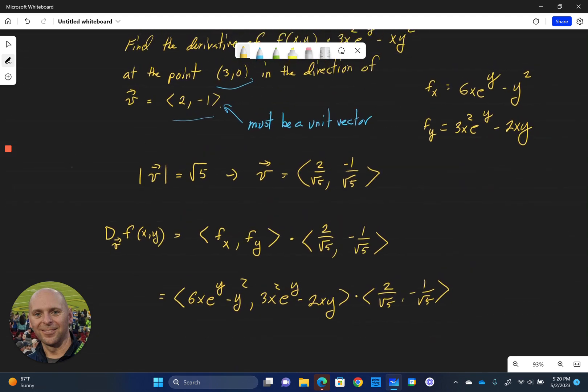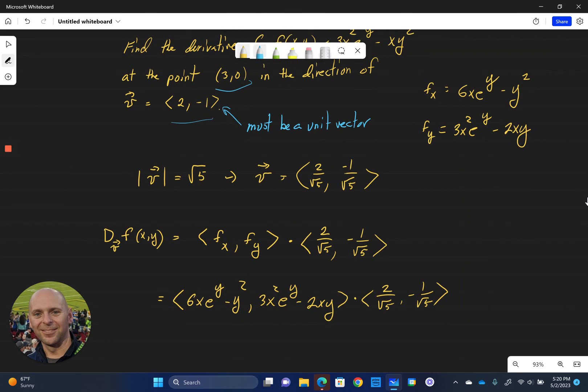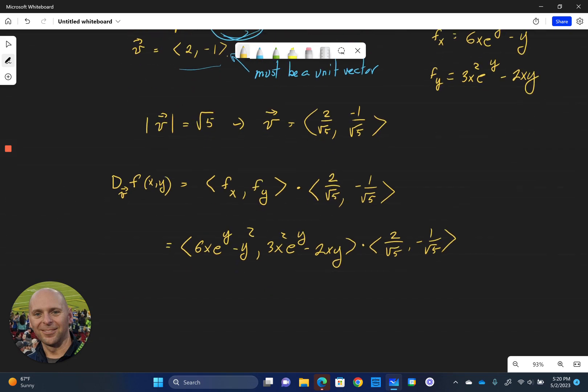Now in this case, we're doing this at a particular point. We know we wanted to do this at the point (3, 0). So we can actually plug in this point now as opposed to working with this from a functional standpoint to finish this out. So we're going to take x equals 3, y equals 0, and substitute that in. And that will give us our derivative for f(x) in the direction of v at (3, 0).